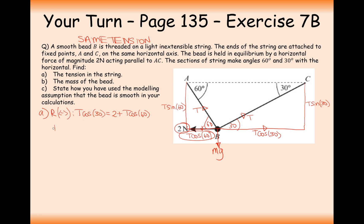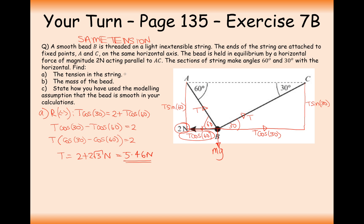Grouping T terms: T cos 30 minus T cos 60 equals 2, so T times the bracket (cos 30 minus cos 60) equals 2. Using the calculator in degrees mode, T equals 2 divided by (cos 30 minus cos 60), giving an answer of 2 plus 2 root 3 newtons. That's part A, the value of the tension.